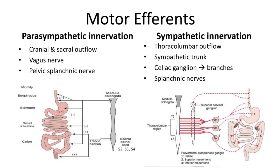Motor efferents of the enteric nervous system can be divided into parasympathetic and sympathetic innervation. The parasympathetic connects the cranial and sacral spinal cord with the GI tract through the vagus and pelvic splanchnic nerve. In contrast, the sympathetic originates in the thoracolumbar spinal cord region and leads to the celiac ganglion that branches further. It is important to note that nerves of the splanchnic system are involved in both afferent and efferent connections.